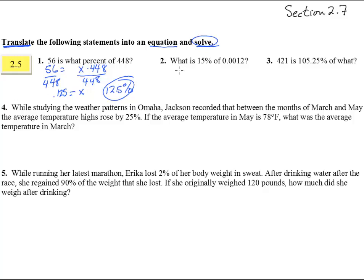There we go, number two. What is 15 percent, that's 0.15, of 0.0012? Notice we don't have to solve anything, X is already by itself. So we get X equals 0.15 times 0.0012, punch that in your calculator and you get 0.00018.